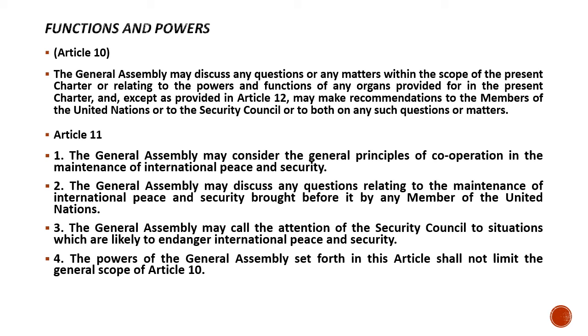The General Assembly has the power to discuss matters related to peace and international security, but this must not limit the general scope of Article 10. Under Article 10, it is the responsibility of the General Assembly to generally engage in any matter wherever there is a threat to peace. Under Article 11, the General Assembly will be responsible to resolve matters of its member states specifically. That is it for today. Please study these articles in detail, and in the next lecture, you will submit an assignment providing an example for each article where that particular article was implemented.